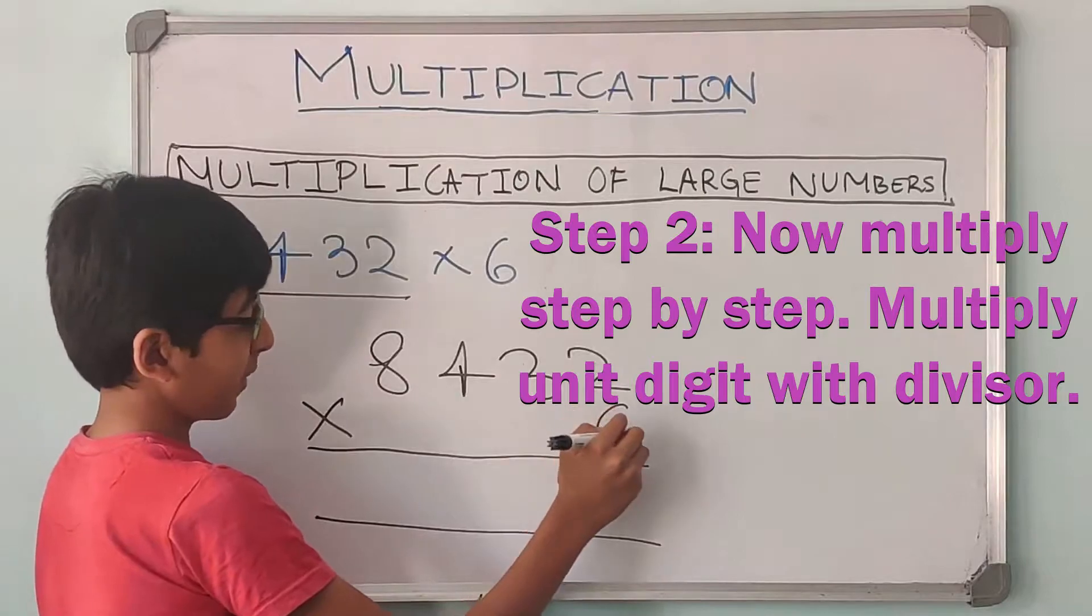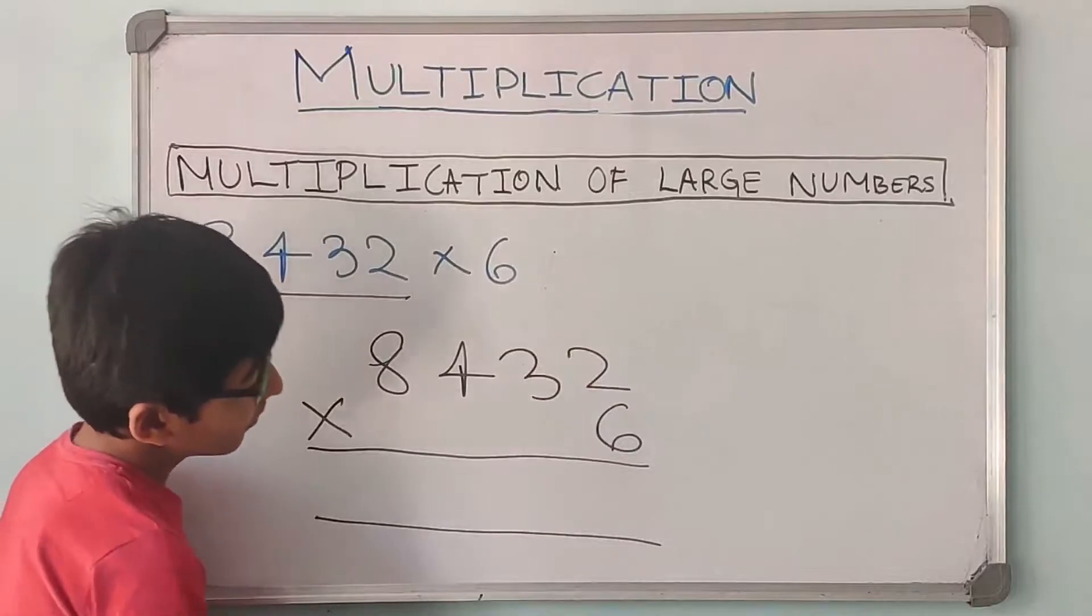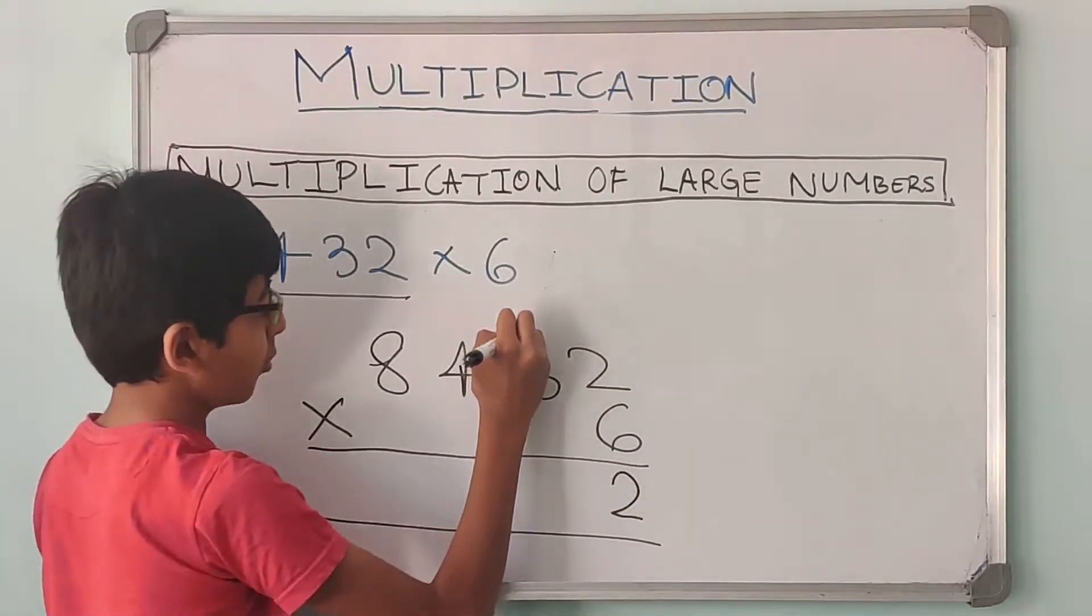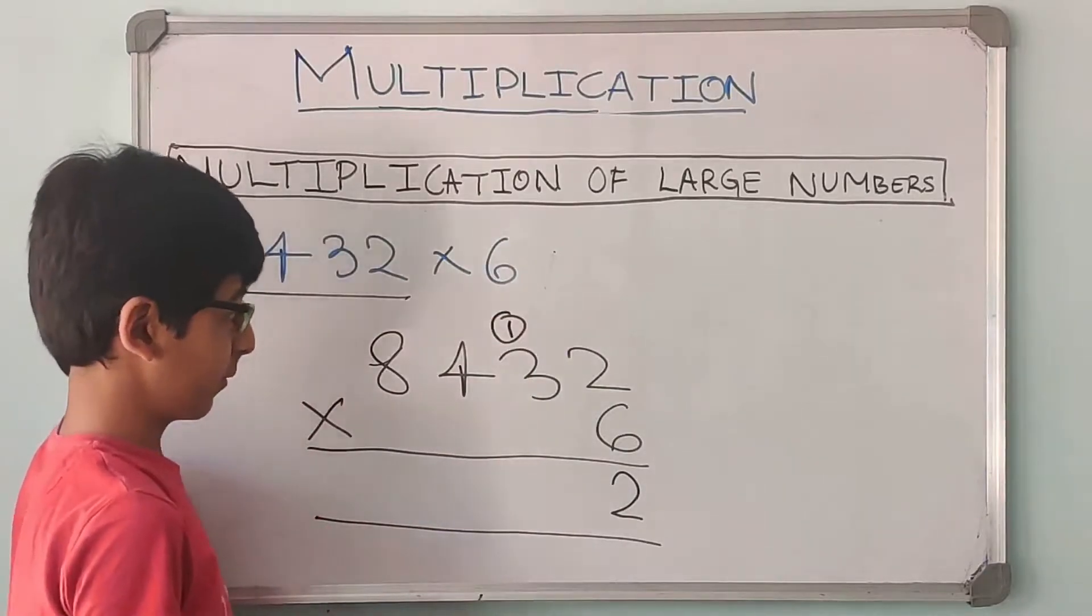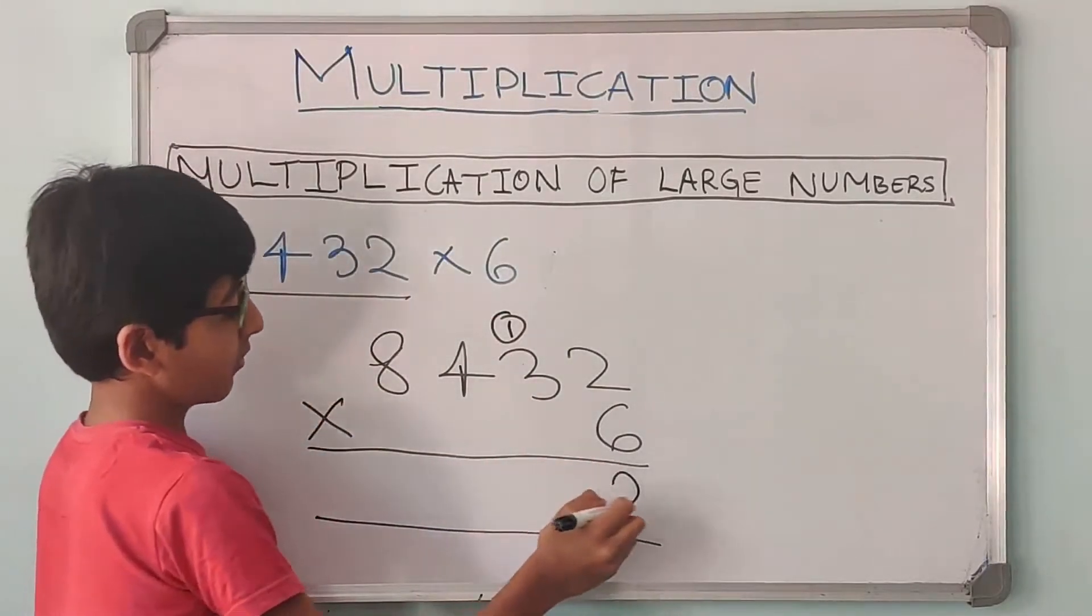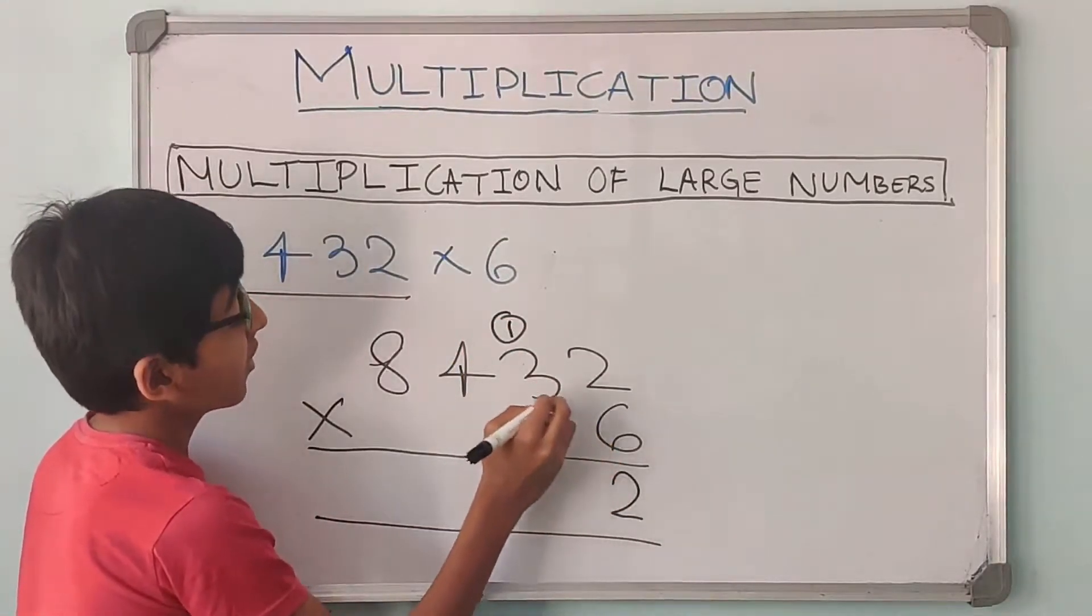After this we have to multiply step by step. First we have to multiply 6 times 2. 6 into 2 gives us 12. 2 comes down, 1 carry forward. So don't write it directly over here. Only one digit and the other digit goes carry forward.